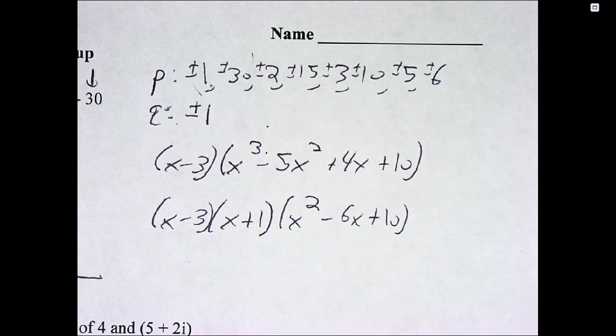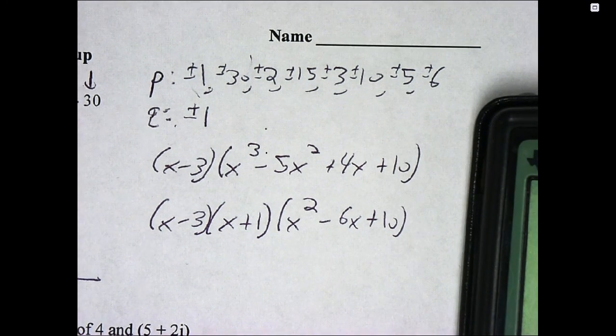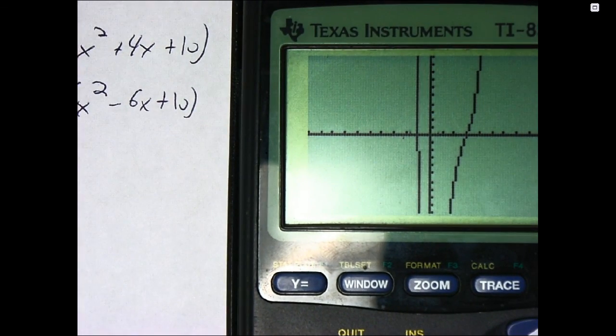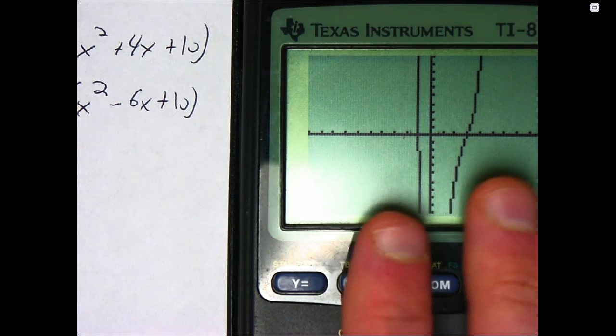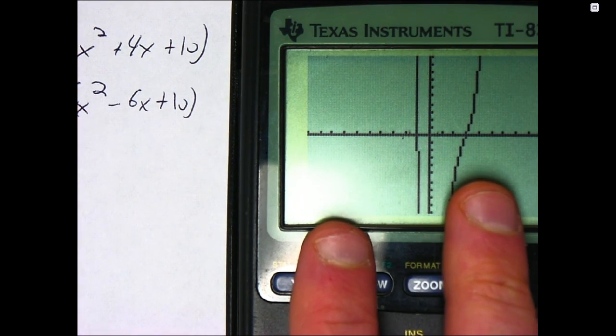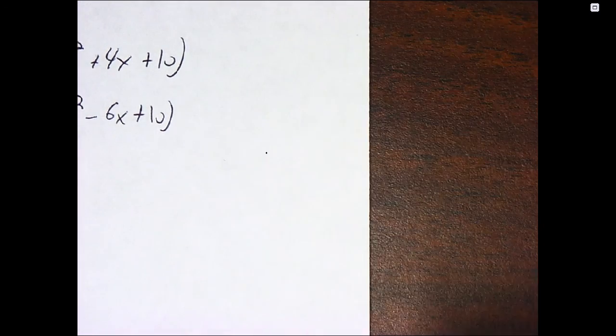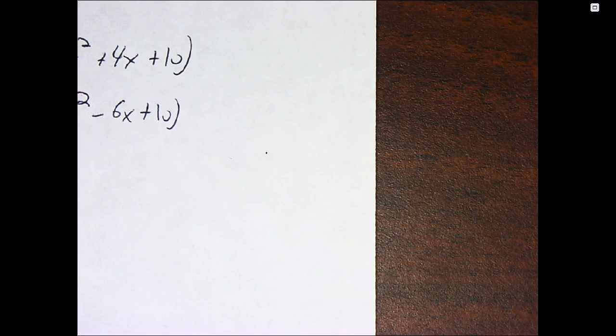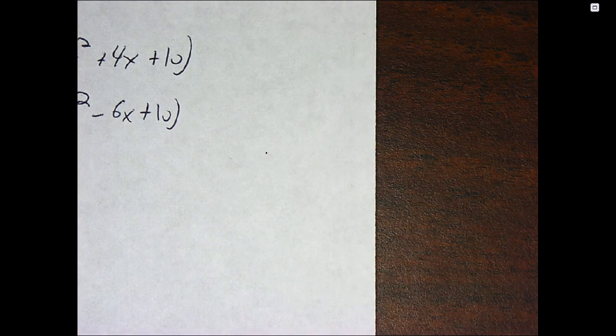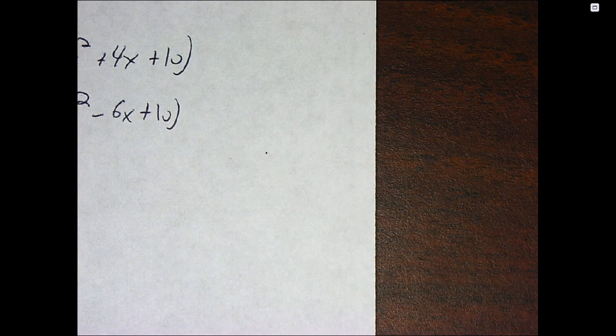Okay, now I have a couple choices. One, I don't see any more x-intercepts on here. I could play around with my window. I mean, I'm not seeing numbers like 15 and 30 here, which were on my list of Ps and Qs. So I could do that. But since I get down to a quadratic, now if I want to, I can go to my quadratic formula on my calculator.